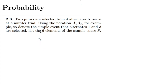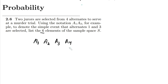Let me lay out the scenario. We have four jurors: a1, a2, a3, and a4. I have to select any two of them. The selection process is such that a1 a2 is equivalent to a2 a1 — meaning the order doesn't matter.